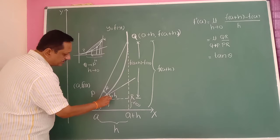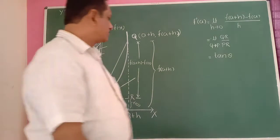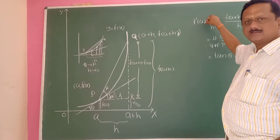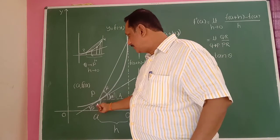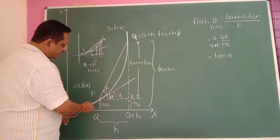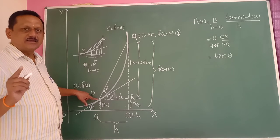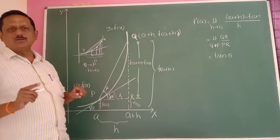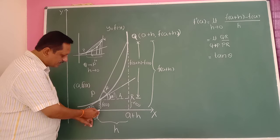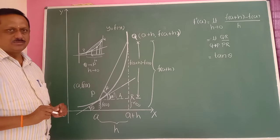So tan θ gives the slope of the tangent at P. F'(a) always represents the slope of the tangent to the curve at the point a. Therefore, the derivative f'(a) equals tan θ, which is the slope of the tangent line at point a. Remember: derivative evaluates the slope of the tangent.